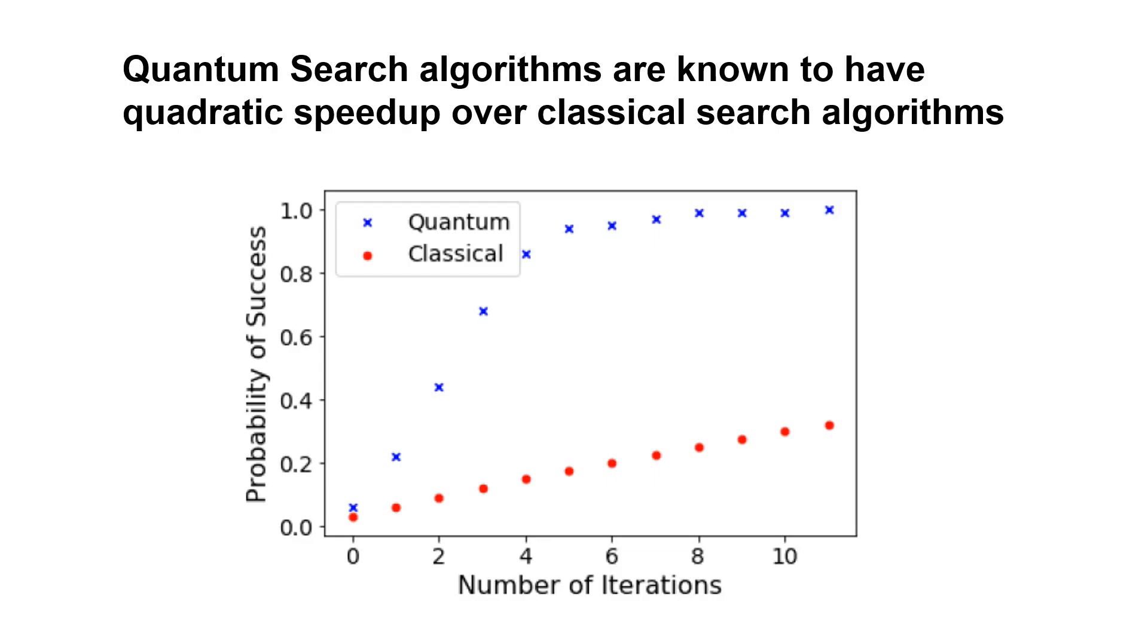Quantum search algorithms are known to have quadratic speedup over classical search algorithms. This graph shows our results for one such problem. The x-axis is the number of iterations of search, and the y-axis shows the probability of success for a quantum and classical neural network. We see that the quantum neural network had significant speedup over the classical.